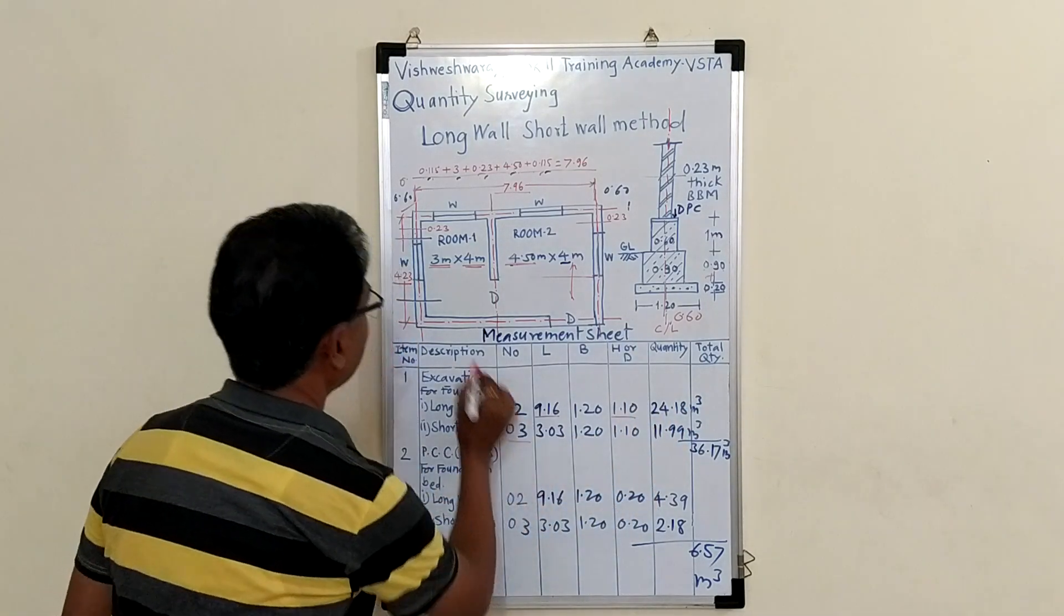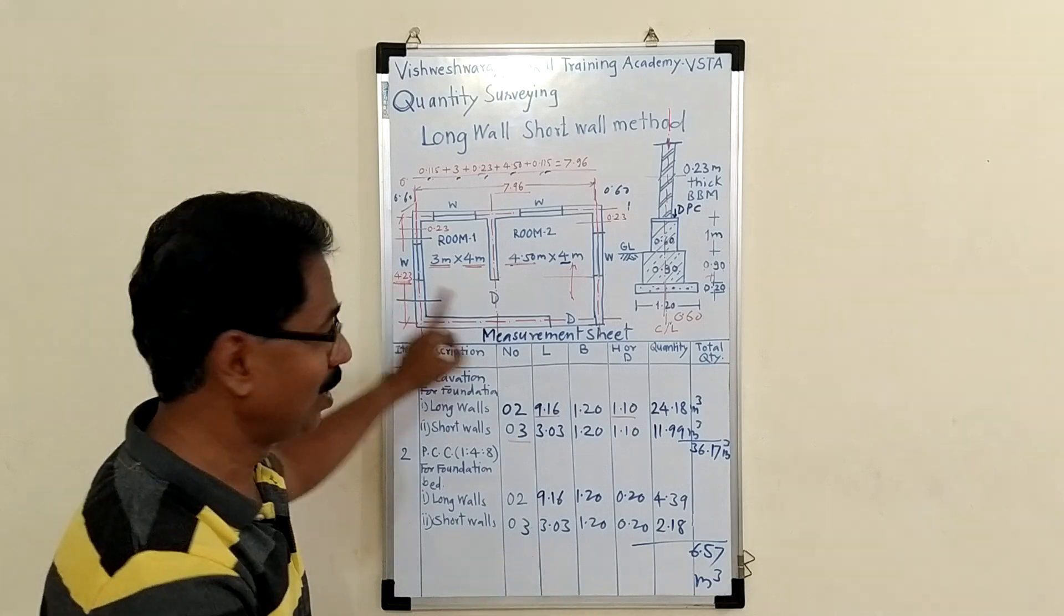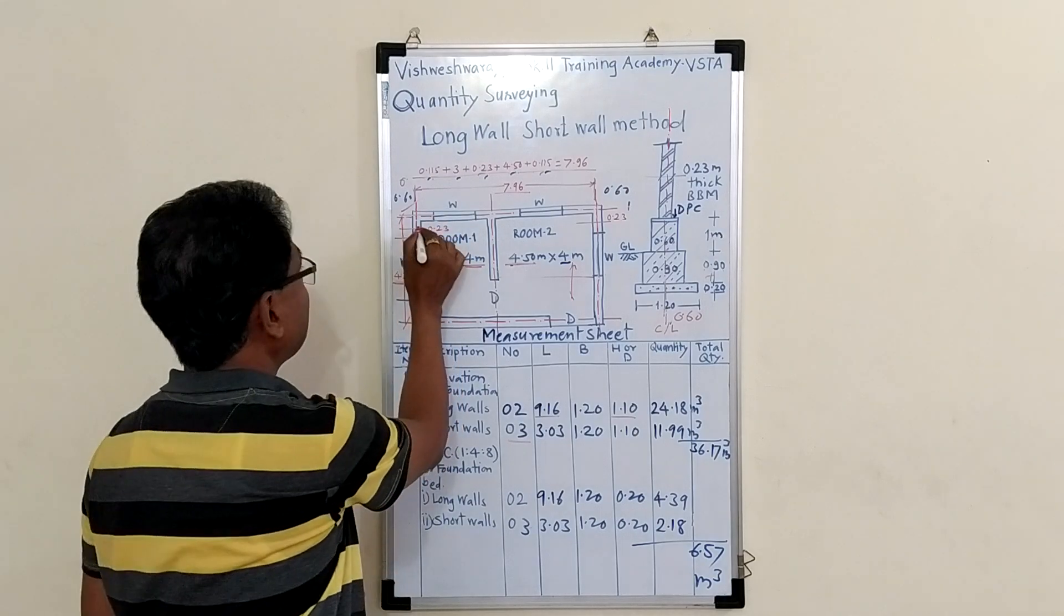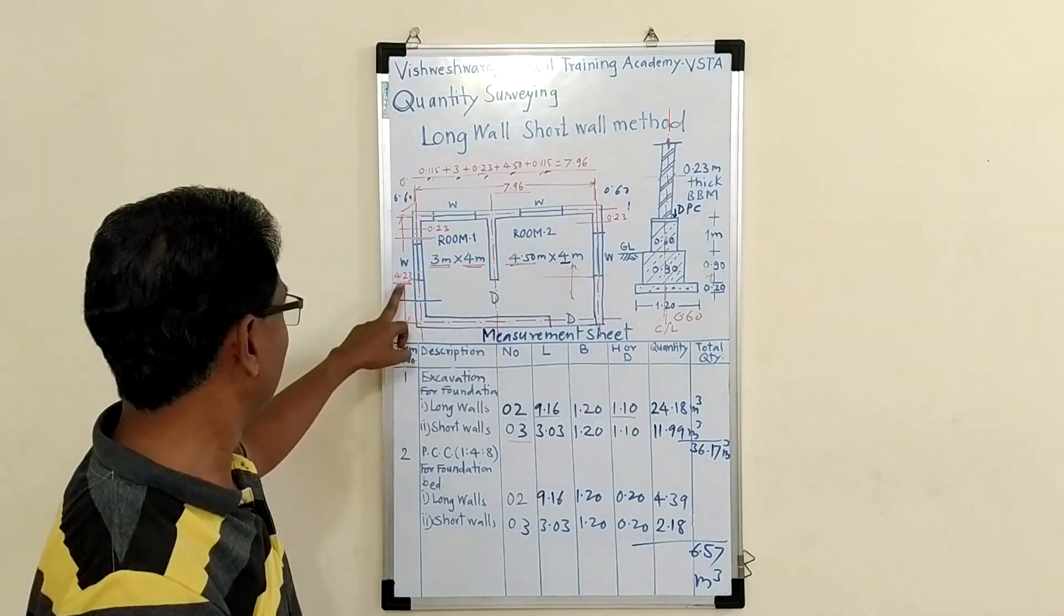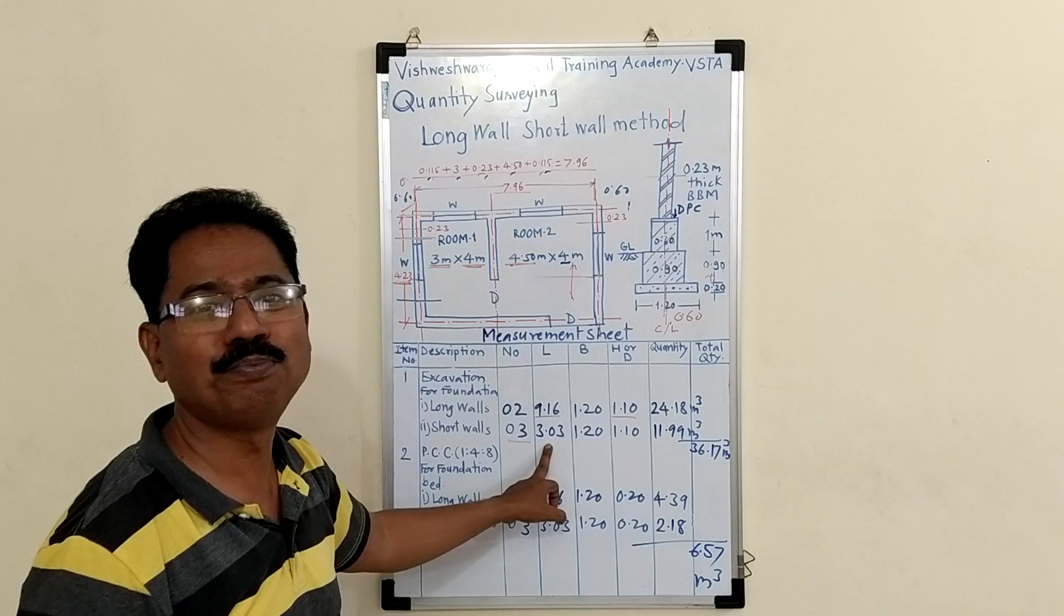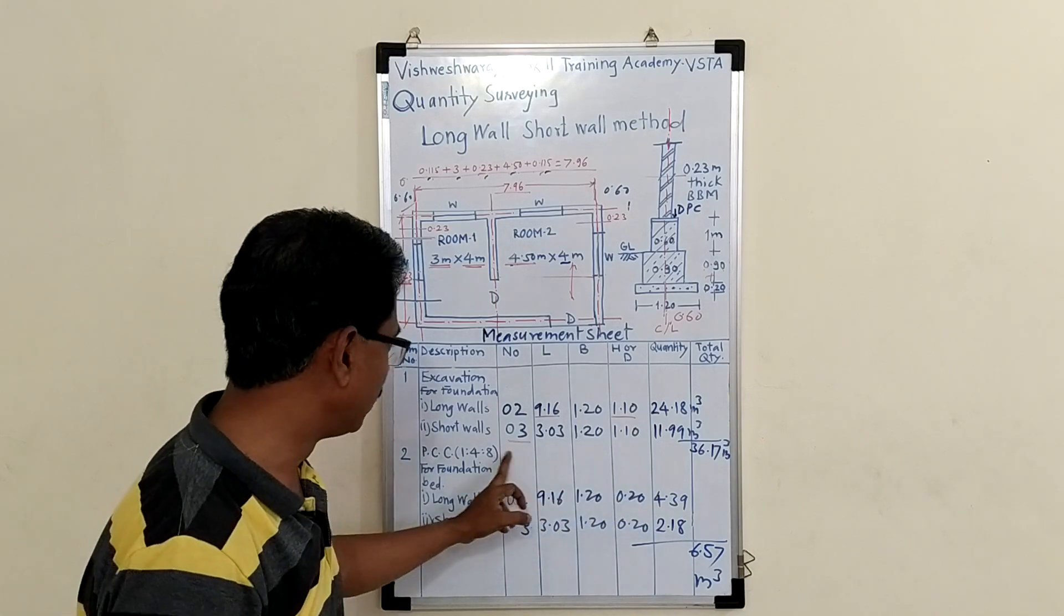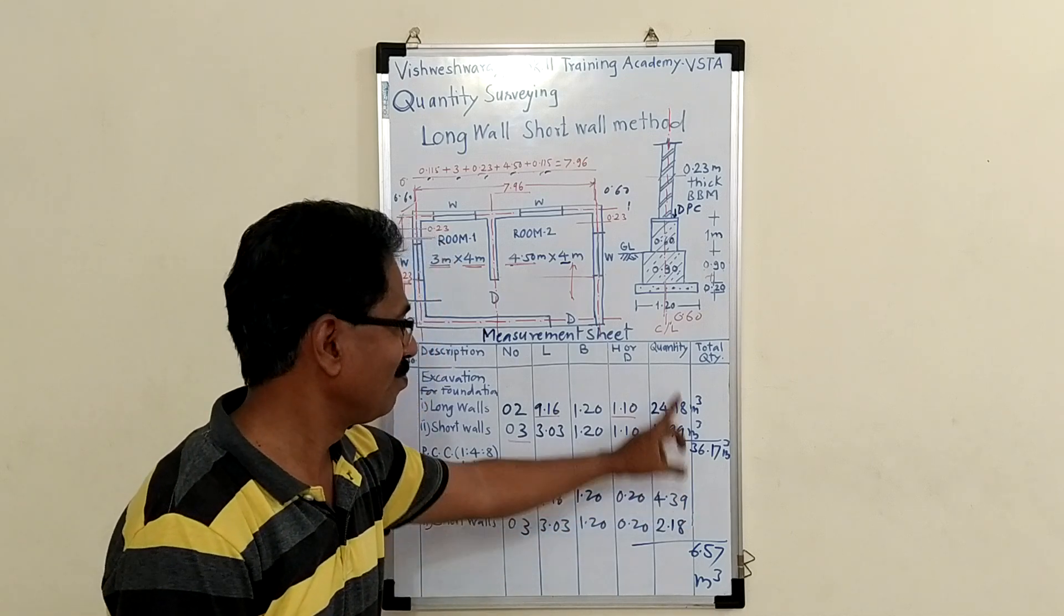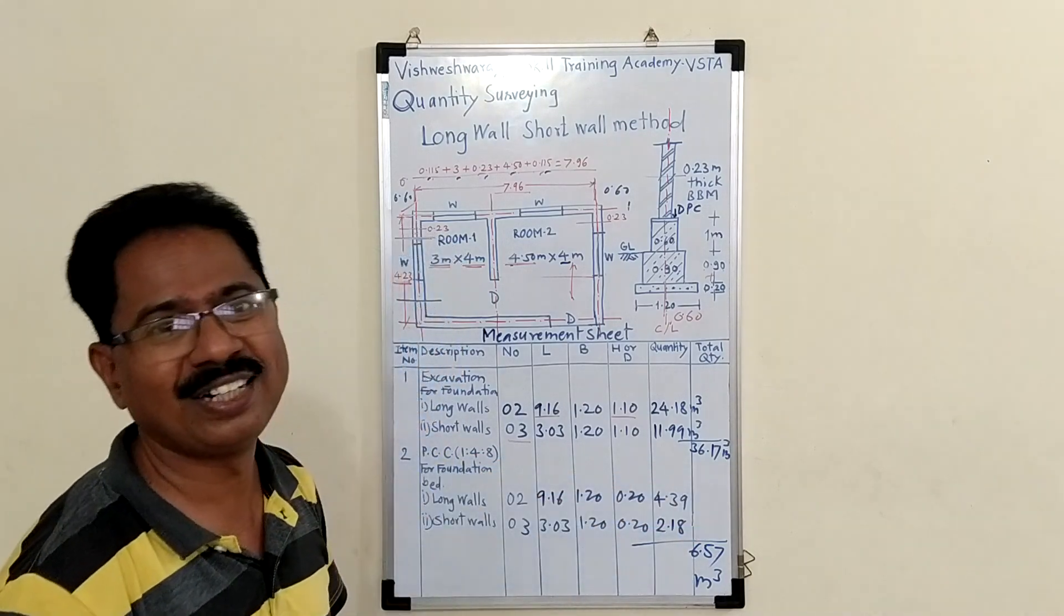Then short walls, number 3. Center line length 4.23 minus 1.2 because in long wall you considered already 0.60 from this side and 0.60 from that side. So you have to deduct the width of excavation from the short wall center line length. 4.23 minus 1.2, it comes 3.03. Width 1.20, depth 1.1. Multiplying this you will get the quantity of excavation for short walls: 11.99. And sum of these long wall and short wall, total quantity of excavation is 36.17 cubic meter.